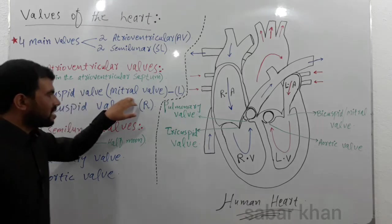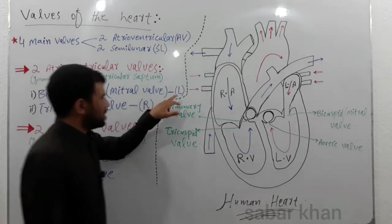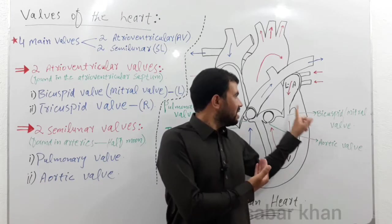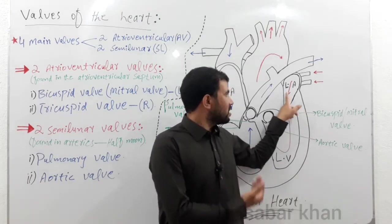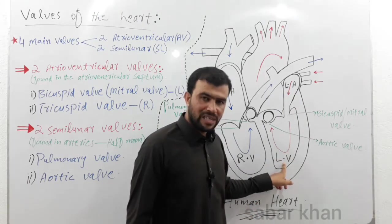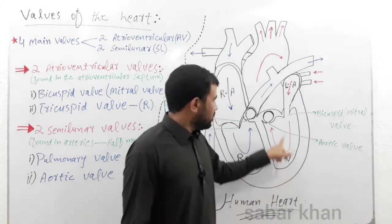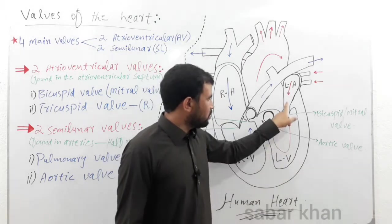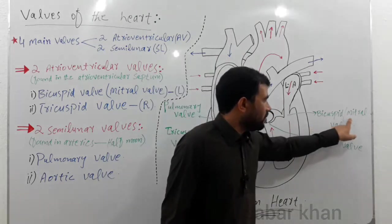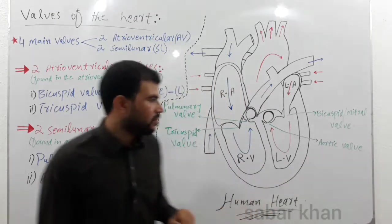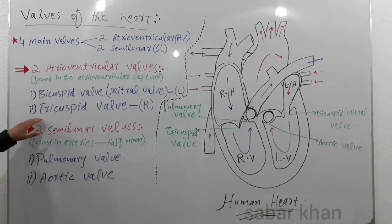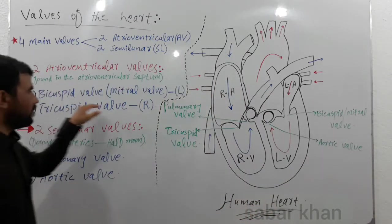...the bicuspid valve or mitral valve, which is present on the left side of the heart. This is the left atrium and this is the left ventricle, and the wall present between these two chambers is called the bicuspid valve or mitral valve.